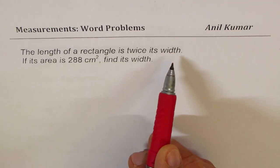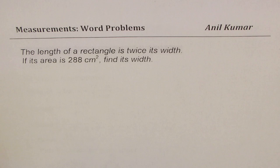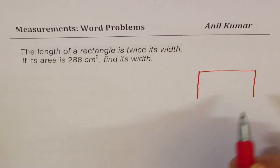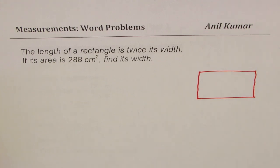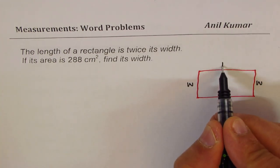its width. If its area is 288 centimeter square, find its width. So let's sketch one rectangle here. Opposite sides are of equal length, so let us say that width is W. So these two sides will be W and